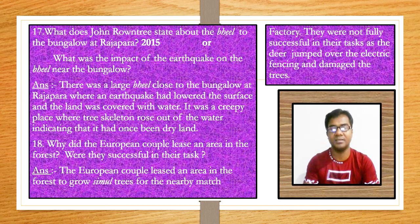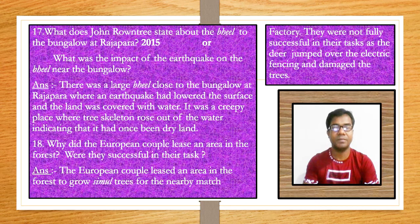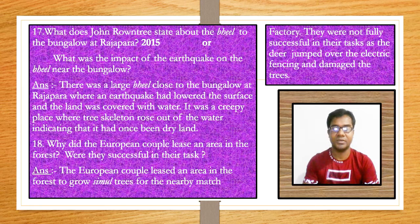Question 18: Why did the European couple lease an area in the forest, and were they successful in their task? The European couple leased an area in the forest to grow simul trees for a nearby match factory. They were not fully successful in their task, as the deer jumped over the electric fencing and damaged the trees.